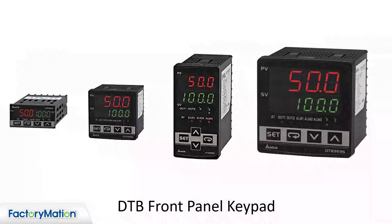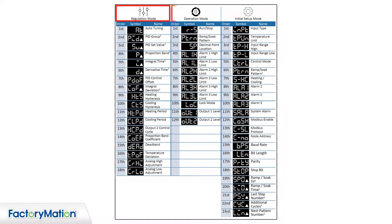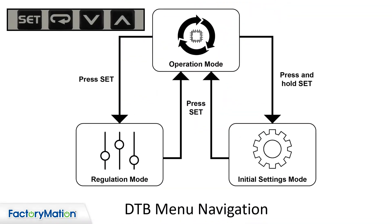All Delta DTB controllers are programmed from the front panel keys. The DTB parameter menus can be navigated with the Set and Cycle buttons. There are three parameter setup menus in the DTB. The Set button navigates between the three menus.